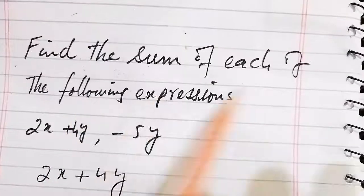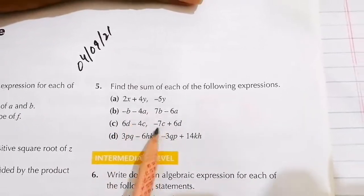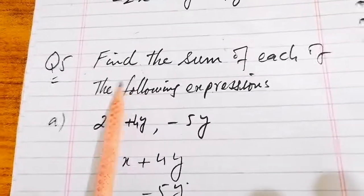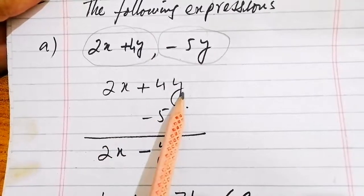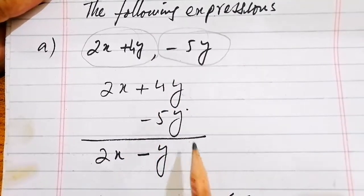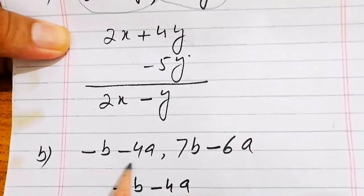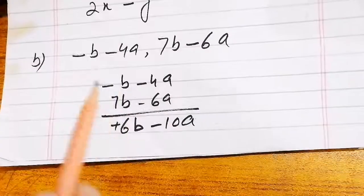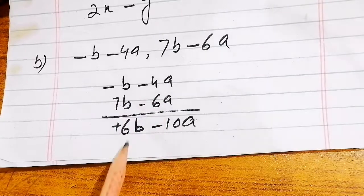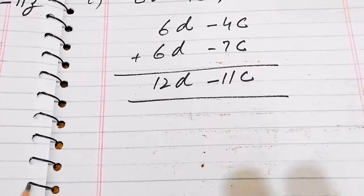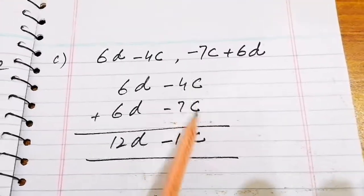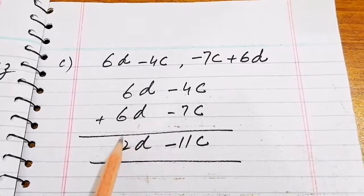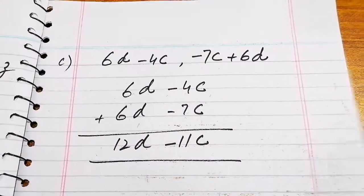Question number 5: find the sum of each of the following expressions. For part (a), 2x plus 4y and minus x plus another expression are added by aligning like terms. For part (b), minus b minus 4a and 7b minus 6a are added, giving 6b minus 10a. For part (c), 6d minus 4c and 6d minus 7c are added: d terms give 12d and c terms give minus 11c, so the answer is 12d minus 11c.